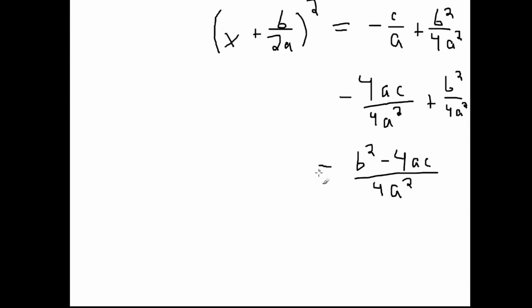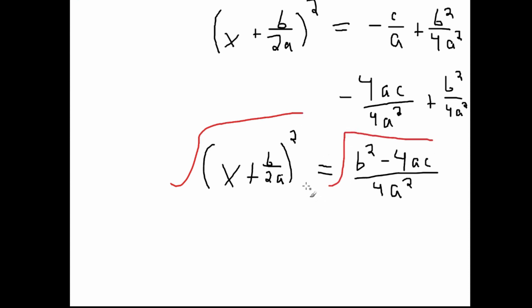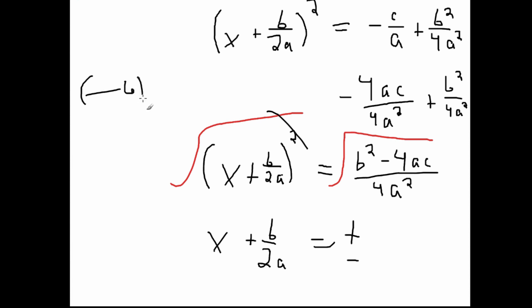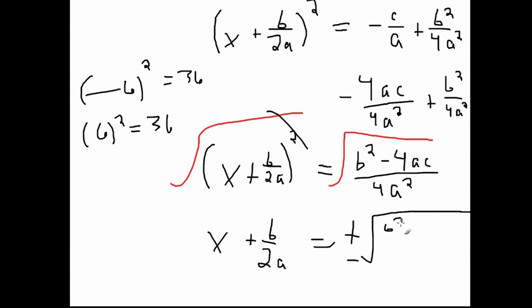This equals the left side term x plus b over 2a squared — we haven't changed anything over there, we just simplified the right side. Now, to simplify further, we take the square root of both sides, which gets rid of the power of 2 on the left. Watch out on the right side though, because when you take the square root it becomes a plus or minus — since the square of negative 6 equals 36, but also the square of positive 6 equals 36. So there can be two possible values. That gives us plus or minus the square root of b squared minus 4ac all over 4a squared.